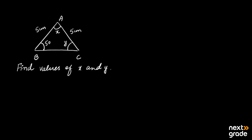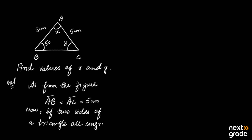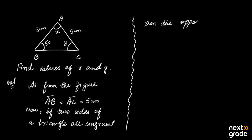If you have to find the values of X and Y, first we look at the figure. In this triangle, AB and AC are both equal to 5 cm. We use the converse theorem: if two sides of a triangle are congruent, then their opposite angles are also congruent. So the angles opposite to those sides are also congruent.